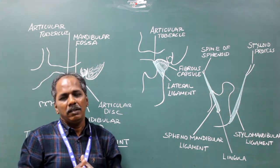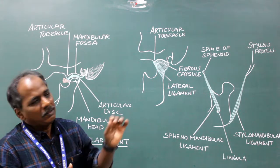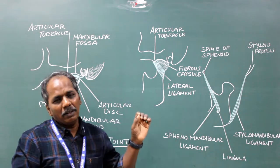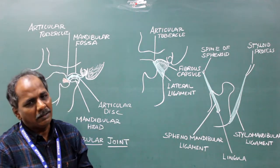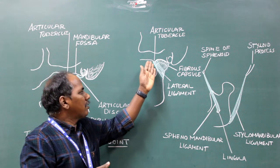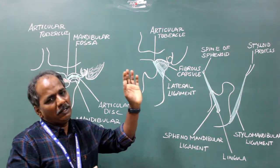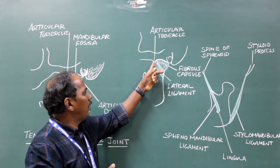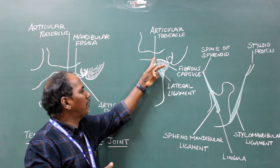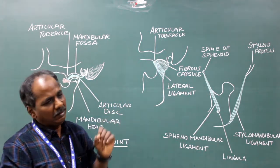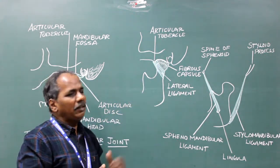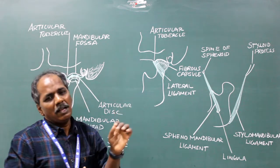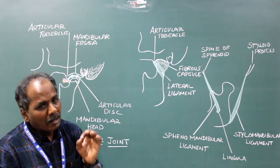Lateral ligament or the temporomandibular ligament. It is the thick and strongest ligament of the temporomandibular joint. It runs downwards and posteriorly. Proximally, it is attached to the articular tubercle of the root of the zygoma. Distally, it is attached to the posterolateral aspect of the neck of the mandible.